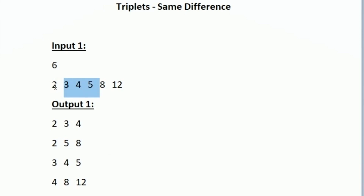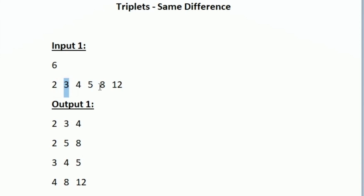Next we have 3 4 5 — the difference between 3 and 4 is 1 and the difference between 4 and 5 is also 1, so both are equal and we print it. Starting with 3 we can also form 3 5 8, but this triplet is not valid because the difference between 3 and 5 is 2 and the difference between 5 and 8 is 3 — they are not equal, so we do not print it.